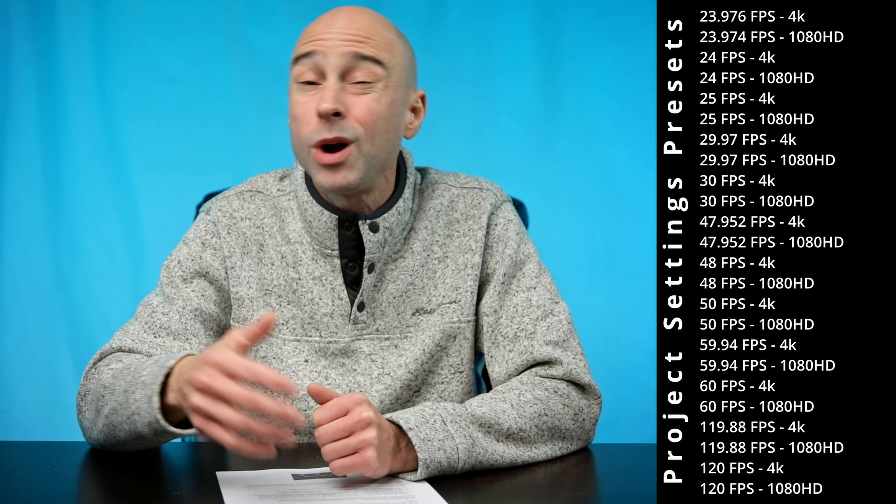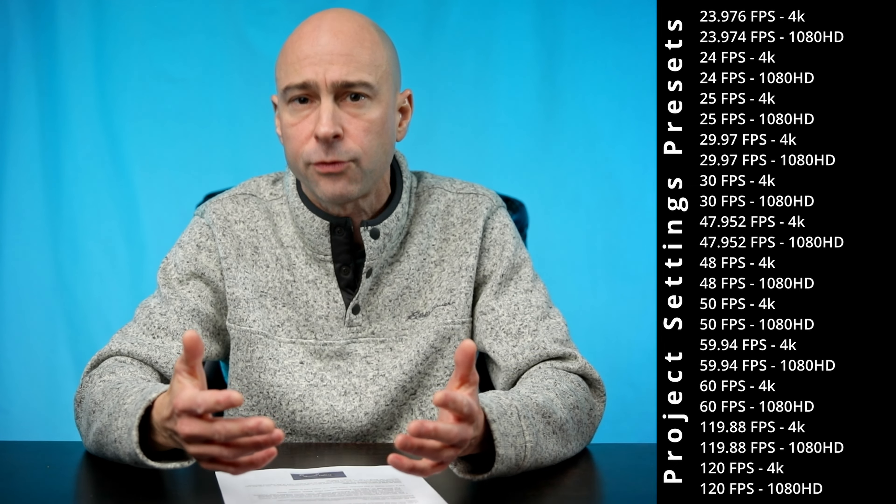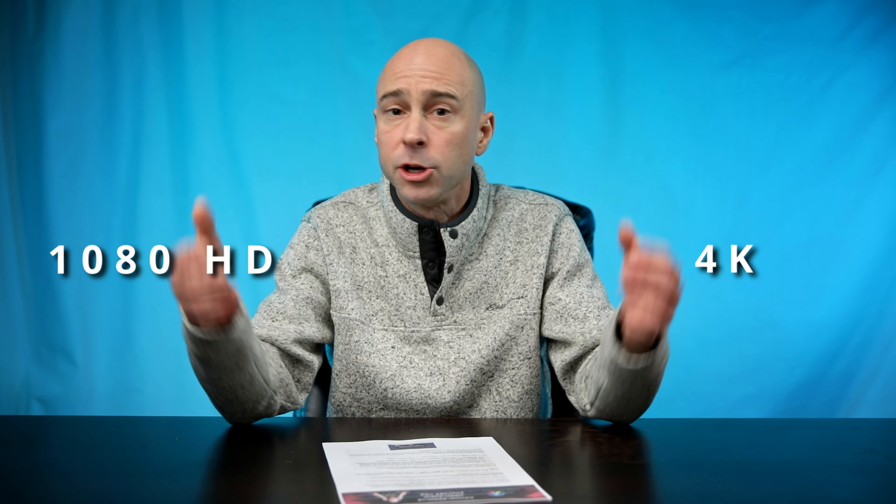There are 24 different project presets covering all the common frame rates you might use, available in both 1080 and 4K. You get all 24 project presets for $12. They're a one-click option that sets up your project settings at a particular frame rate — 1080 or 4K — whatever you want. Just click it, hit load, and you're done. You can move on and start working without changing settings for every single project.